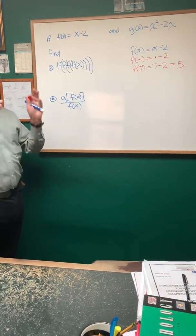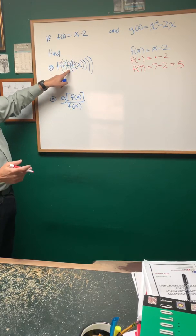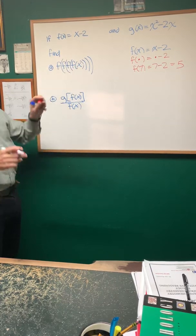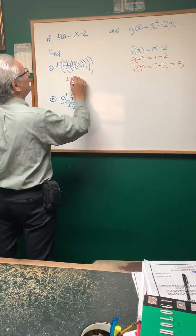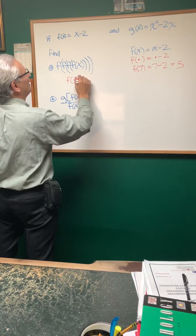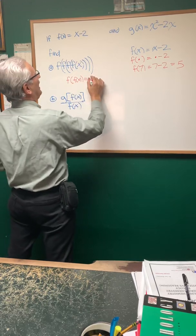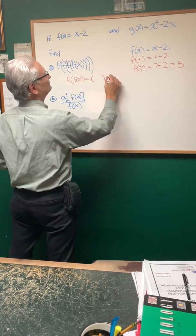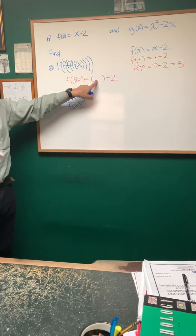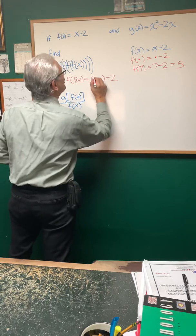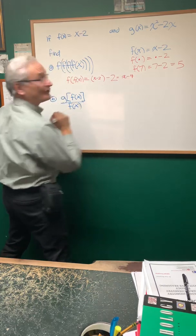So now let's evaluate this expression where I have embedded function notation. I want f of f of f of f of x. Let's take this one step at a time. Let's first evaluate f of f of x. We know that f of x is x minus 2. So in place of x, I'm replacing x with f of x itself, which is the function x minus 2. So what this evaluates to is x minus 4.